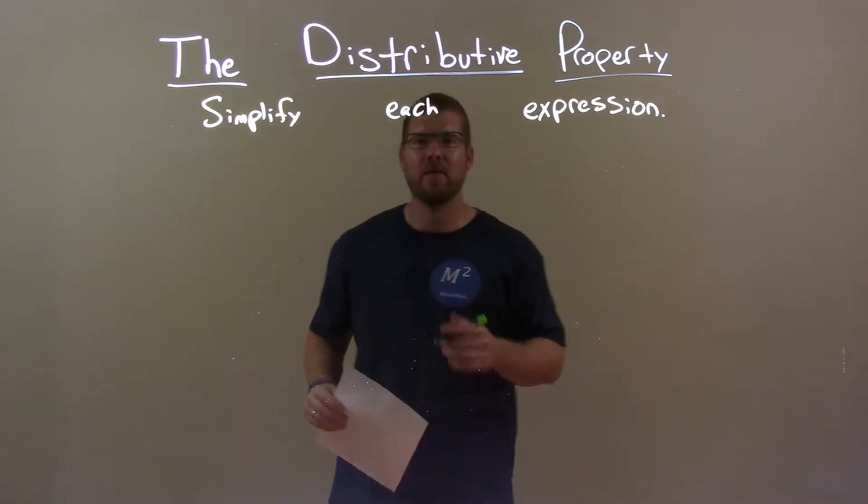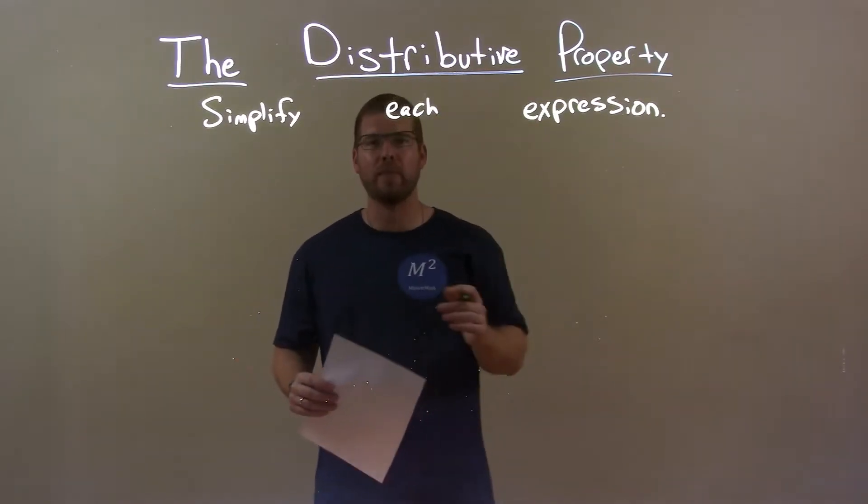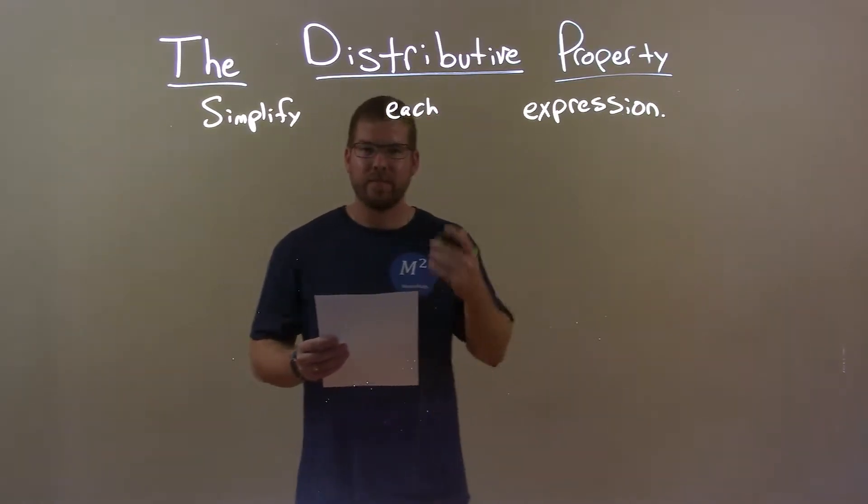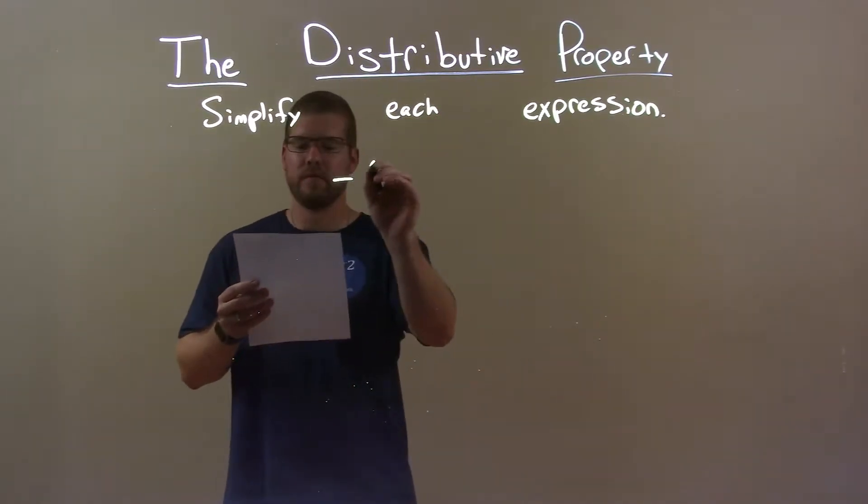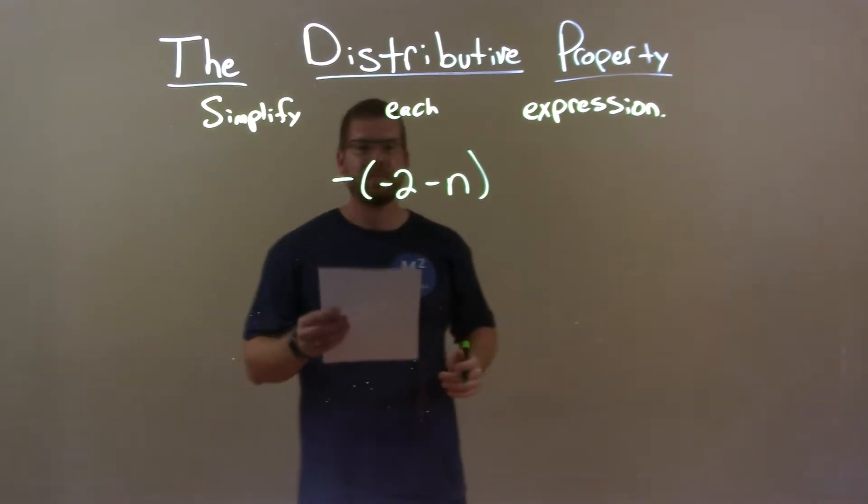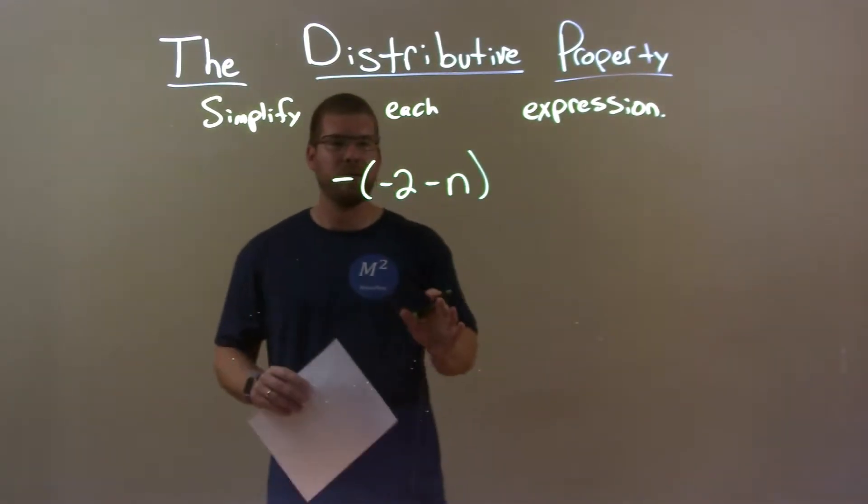I'm Sean Gannon and this is MinuteMath, and today we're learning about the distributive property and simplifying each expression. If I was given this expression: negative times negative 2 minus n, the first thing here inside my parenthesis...